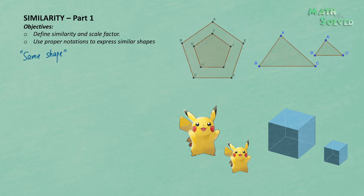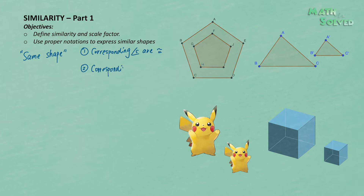In order to be similar, the corresponding angles of the two figures must be congruent — corresponding angles are congruent. And secondly, the corresponding sides must be proportional, meaning the sides have the same ratio.